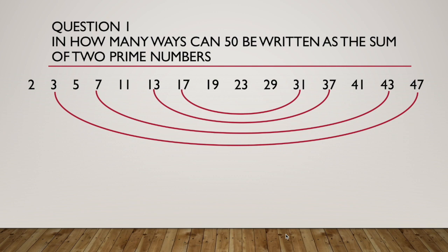If we look in the middle there, those numbers don't pair up with each other. So that is our solution. There are in fact four ways that 50 can be written as the sum of two prime numbers. Three and 47, seven and 43, 13 and 37 and 19 and 31.